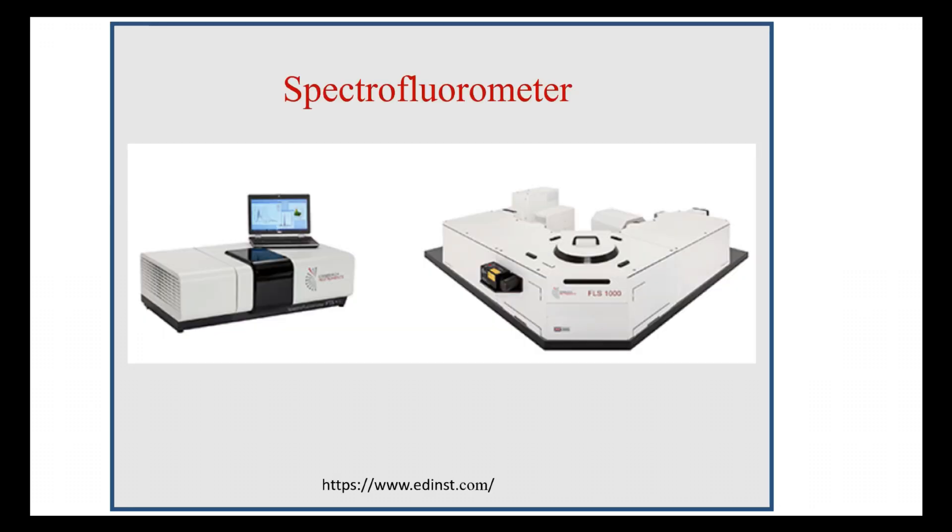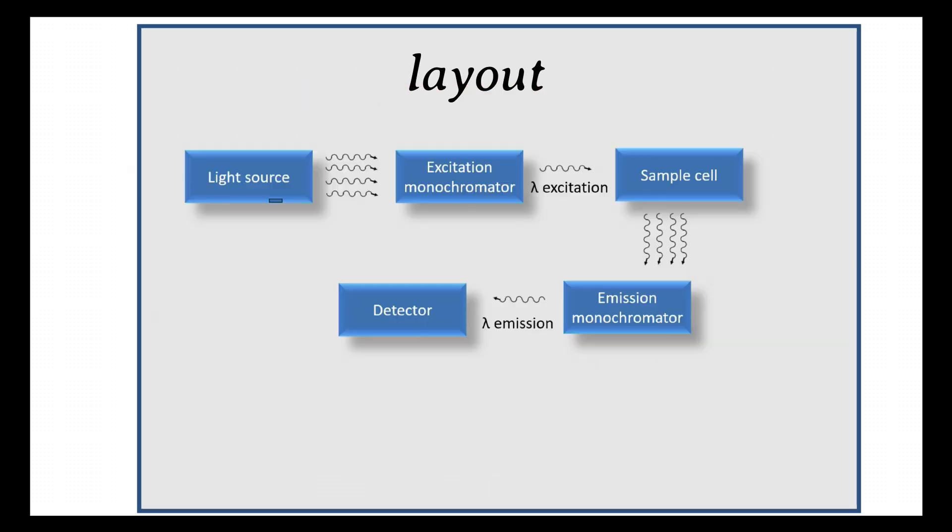The instrument used to measure fluorescence emission from a sample is called a spectrofluorometer, fluorescence spectrometer, or photoluminescence spectrometer. Different manufacturers call it different names. The layout of a typical steady-state spectrofluorometer is shown here. The excitation side of a spectrofluorometer is equivalent to a spectrophotometer—that is, a light source and an excitation monochromator.